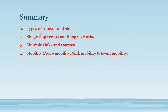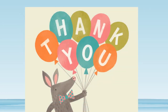In summary, four different scenarios in wireless sensor networks were covered: types of sources and sinks, single hop versus multi-hop network, multiple sinks and multiple sources, and mobility — including node mobility, sink mobility, and event mobility. Based on these four scenarios, we must design proper protocols and the entire architecture of a wireless sensor network to improve overall network performance. Thank you for watching.